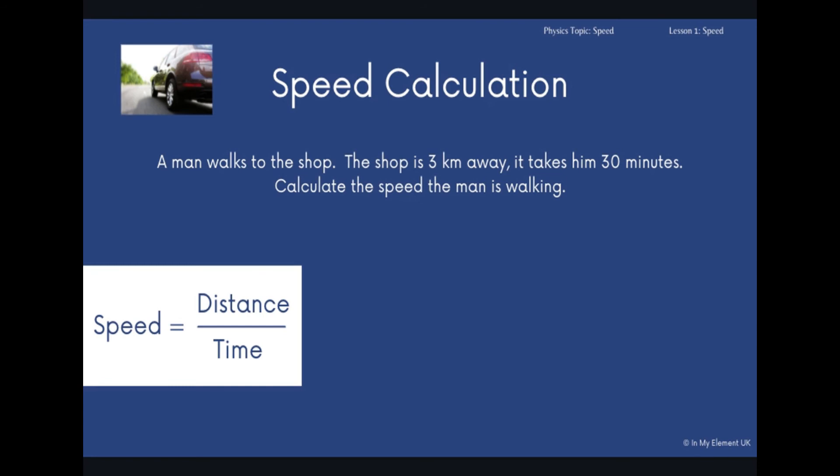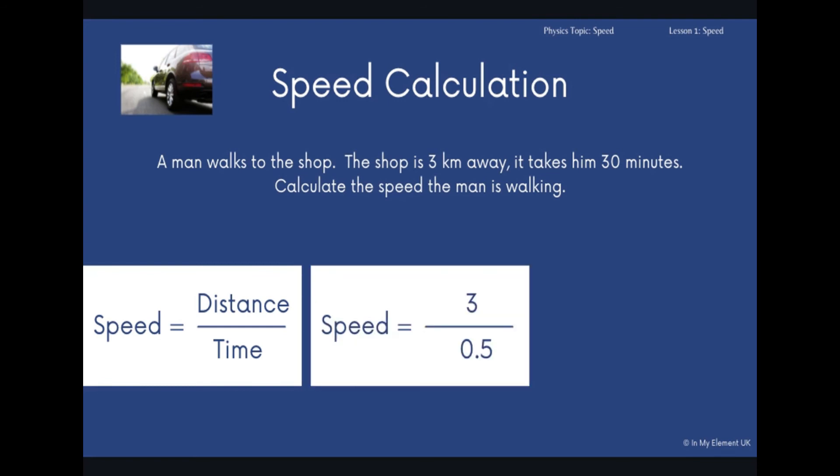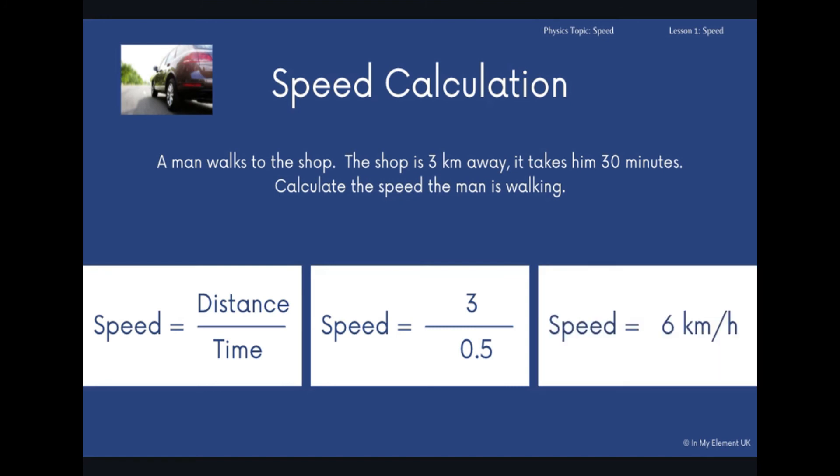So you've got to convert those minutes to hours. So you're using speed equals distance over time again. So you've got three, but notice we've not used 30. So three, the distance was three kilometers. So we've got three and then 0.5 because 30 minutes is half an hour. So the speed that man has walked is six kilometers an hour.